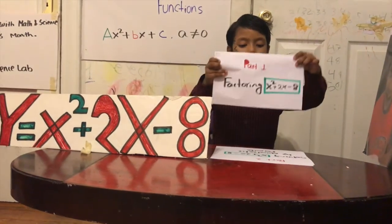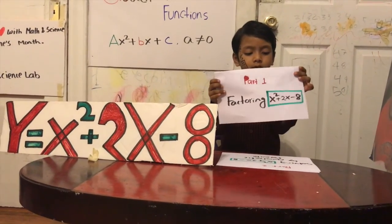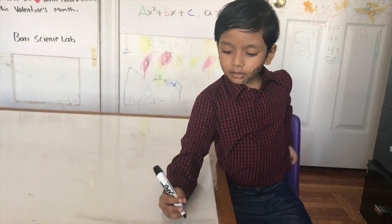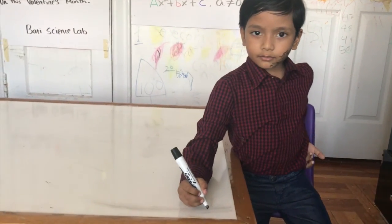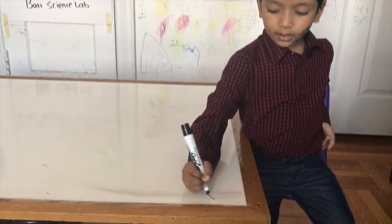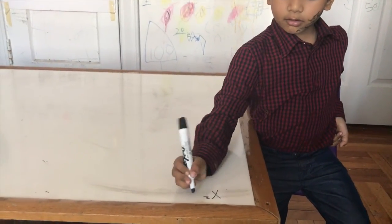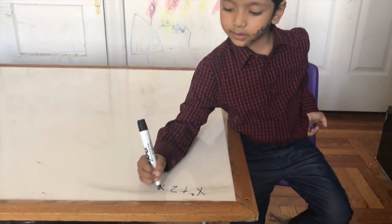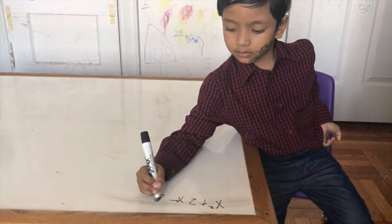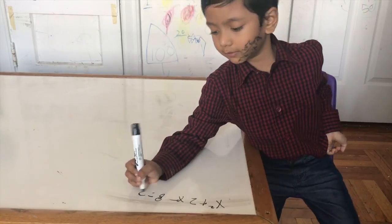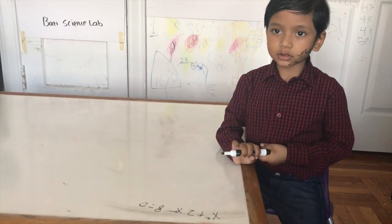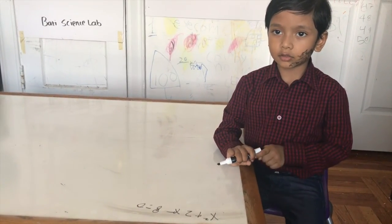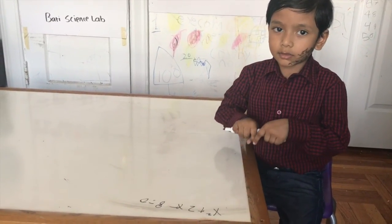I'm going to show Part 1. Now I'm going to write the function: X squared plus 2X minus 8 equals zero. First I'm going to teach you by factoring.